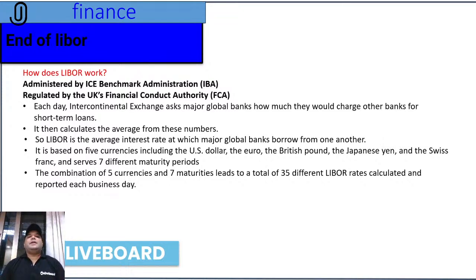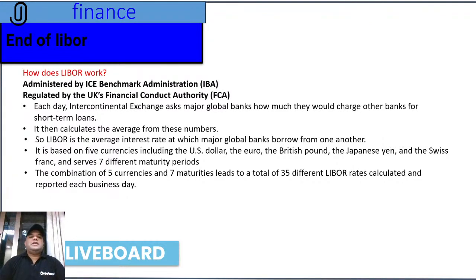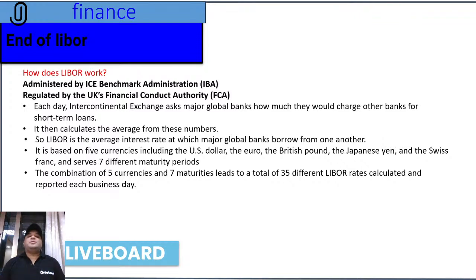Every day, the Intercontinental Exchange asks major global banks how much they would charge other banks for short-term loans. Every country has big banks — India has SBI, ICICI, Axis Bank; globally you have Bank of America, Citibank, HSBC, Standard Chartered, Deutsche Bank, and RBS. ICE asks these major global banks what interest rate they would levy for a short-term loan, then takes an average from these numbers.